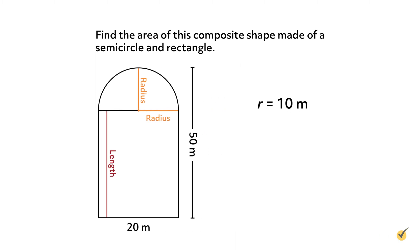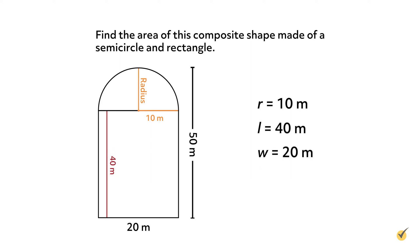Now we can not only find the area of the semicircle, but we can also find the length of the rectangle. Since the height of our object is 50 meters, and the height of the semicircle part, our radius, is 10 meters, that means the length of our rectangle is 50 meters minus 10 meters, which is 40 meters. Now we have all the information we need.